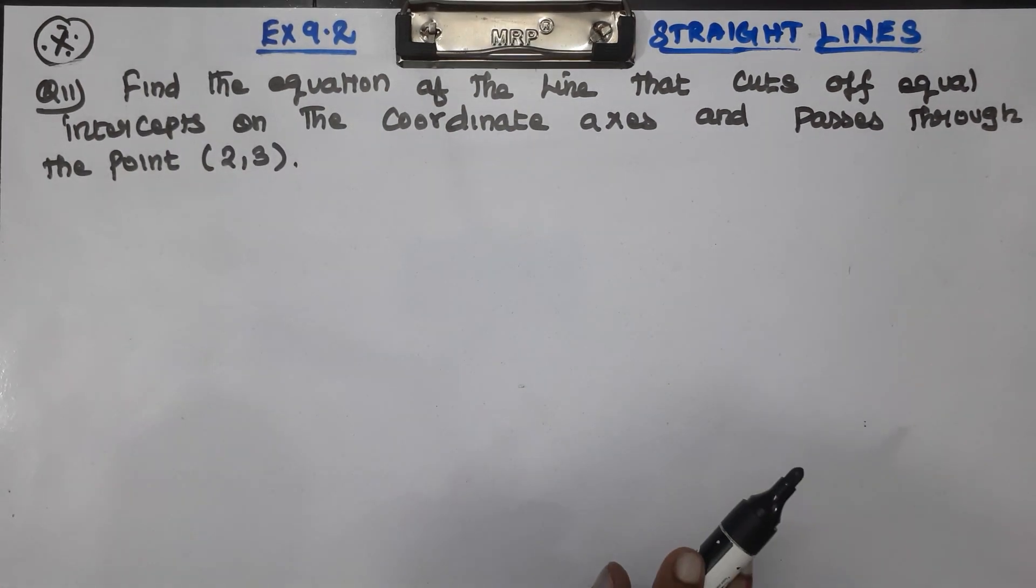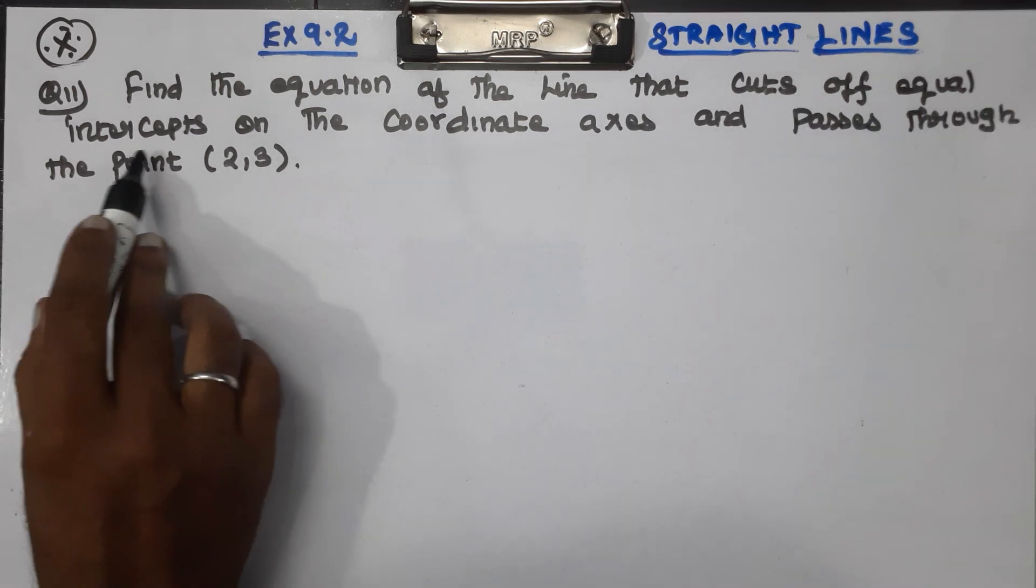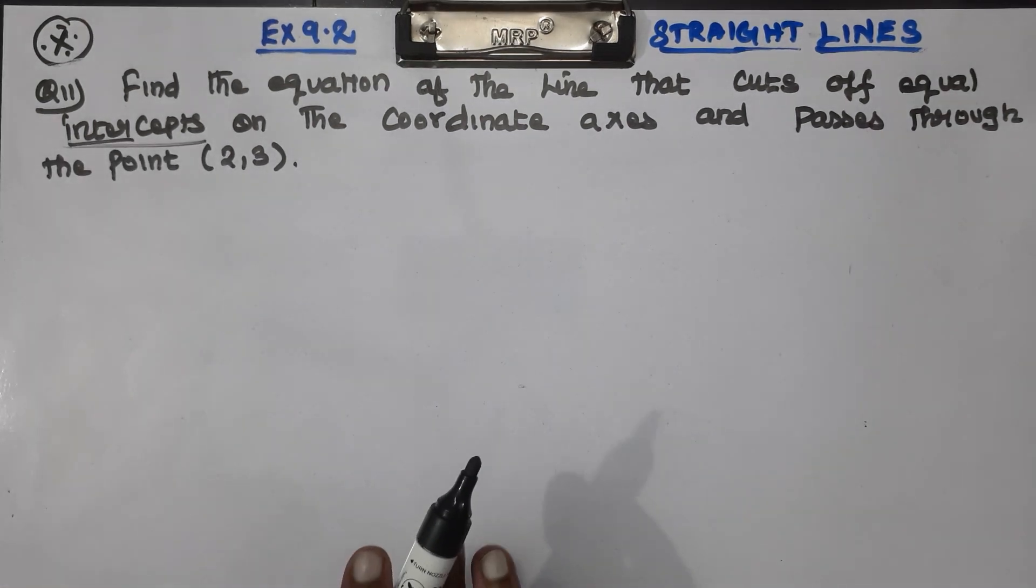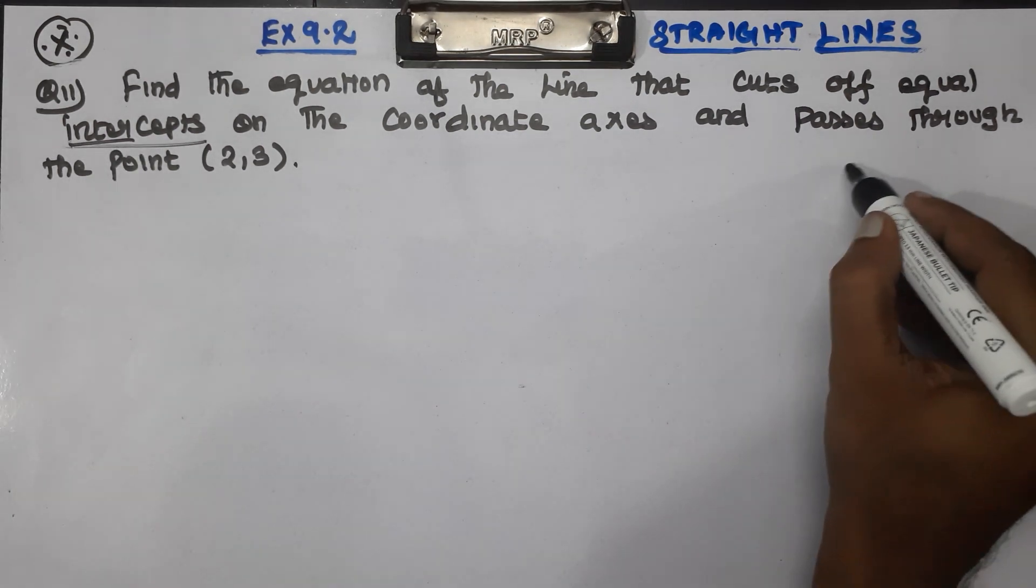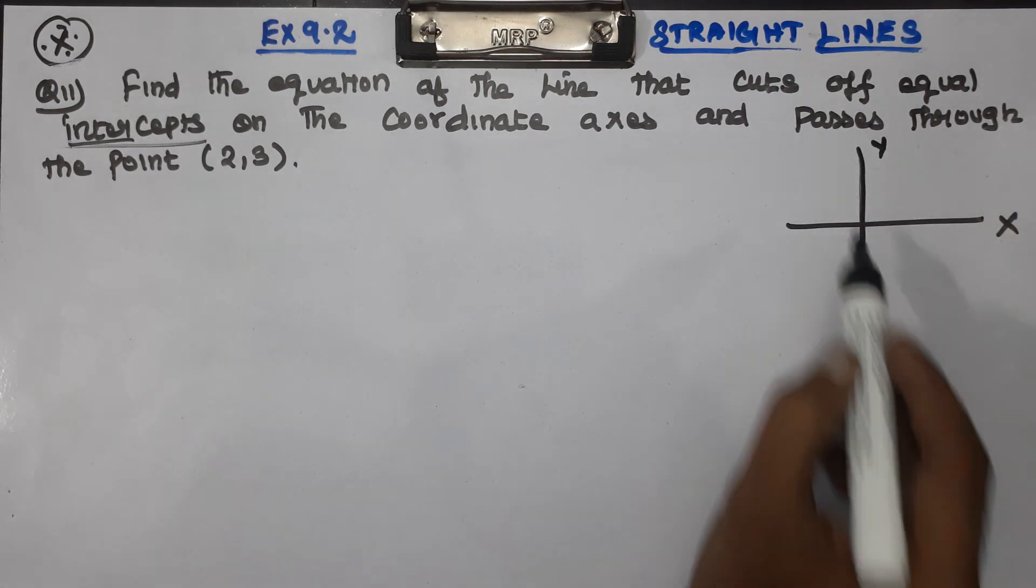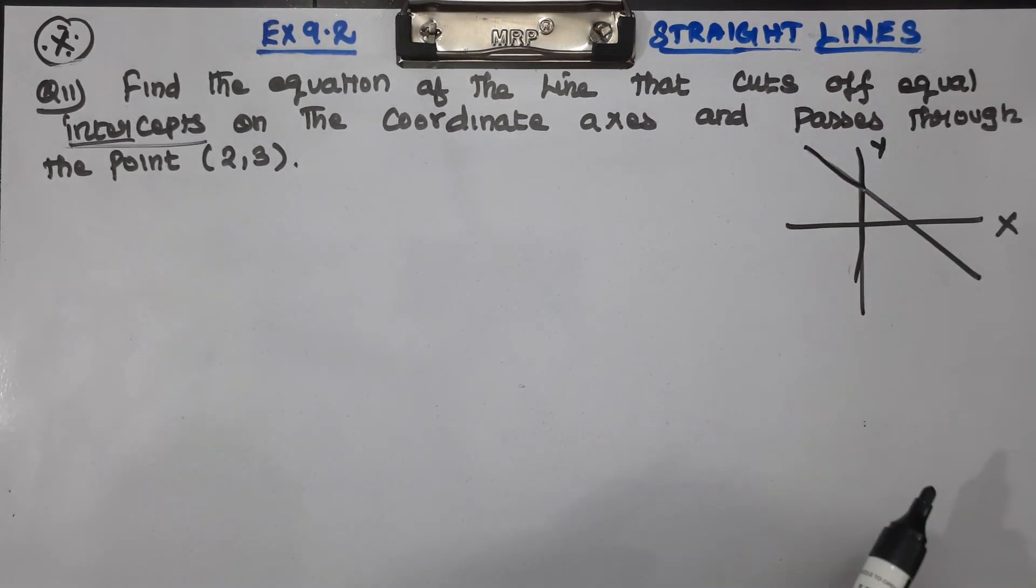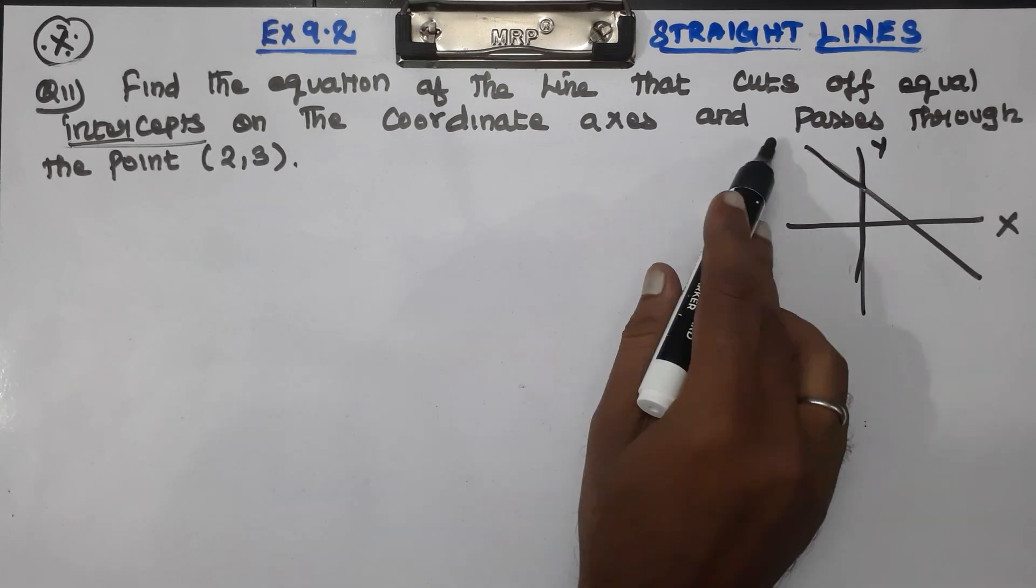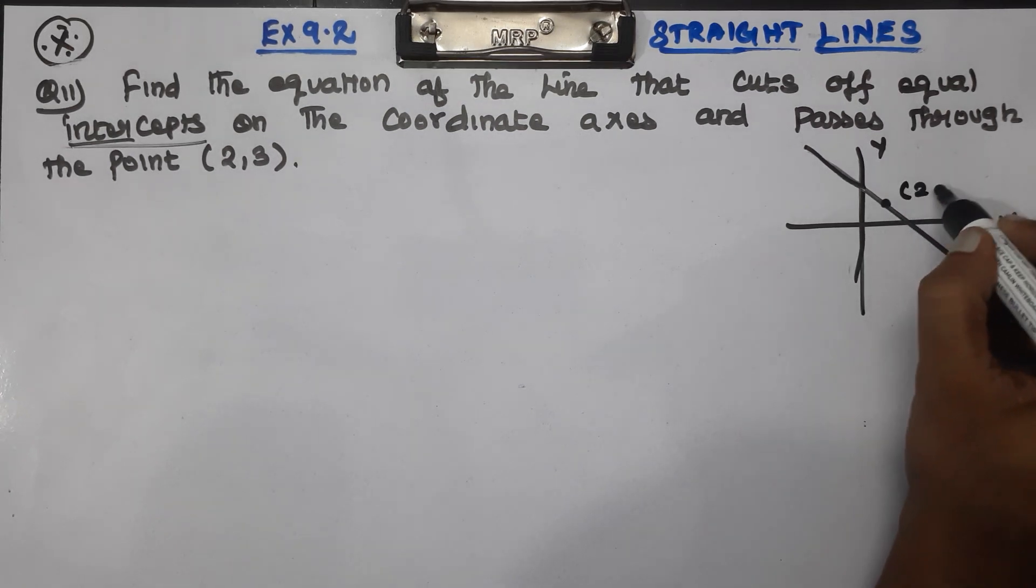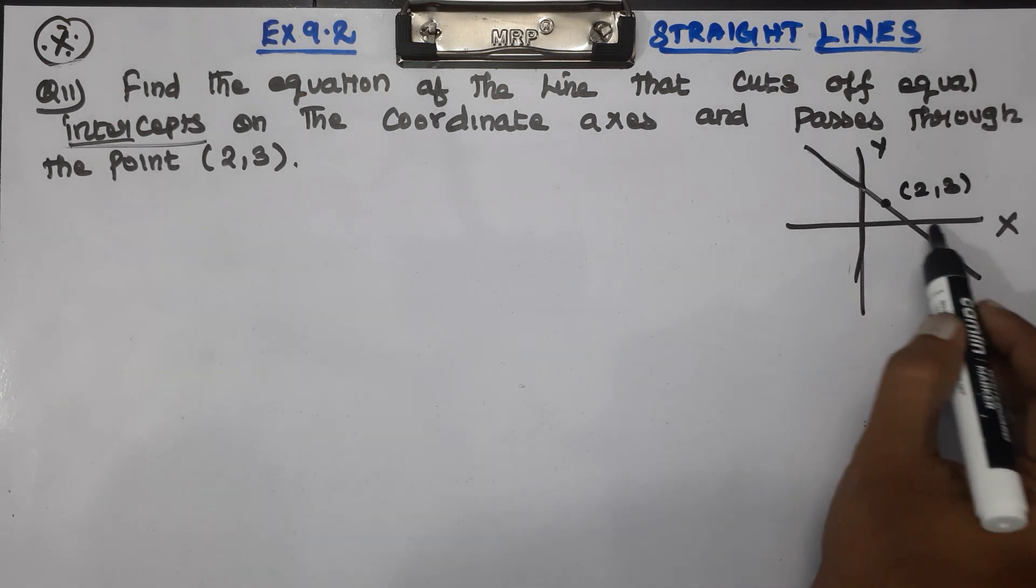Find the equation of the line that cuts off equal intercepts on the coordinate axes and passes through the point (2,3). The intercepts are on the x-axis and y-axis, equal intercepts.